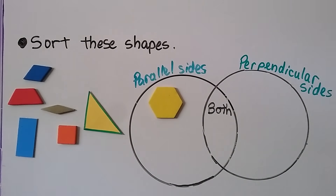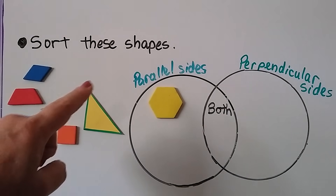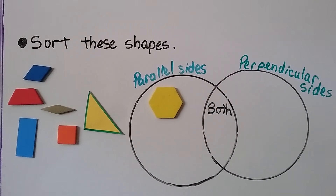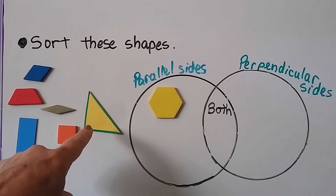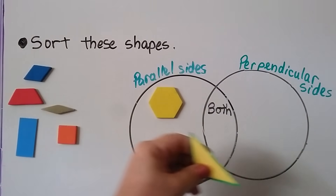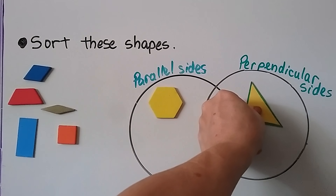What about this triangle? Do you see parallel sides — sides that never meet or cross? No, all the sides meet each other. What about perpendicular? Do you see any sides that make square corners, that make right angles? Yes, I see a right angle right here. In fact, this is a right triangle. It would go in the perpendicular circle.